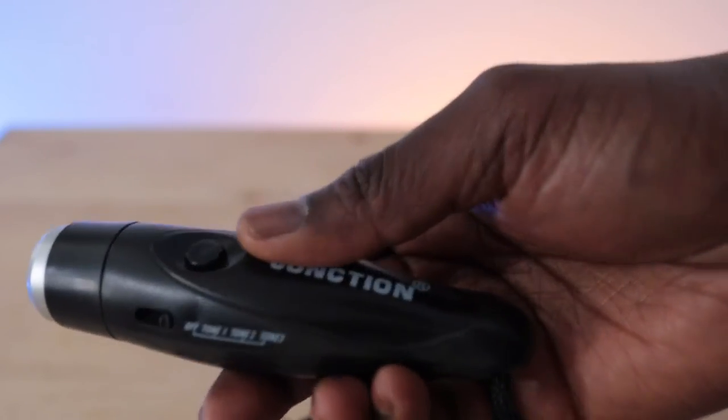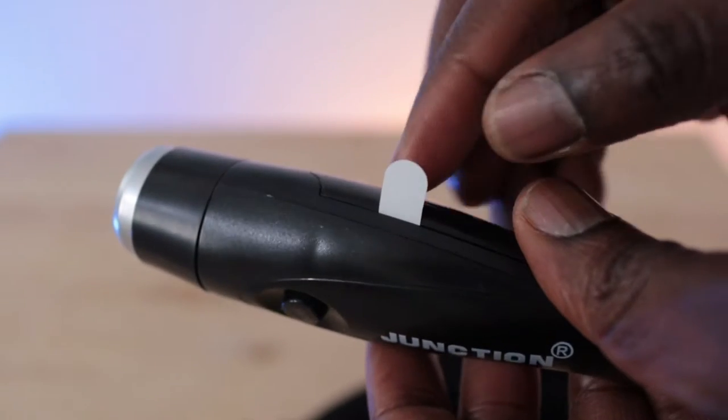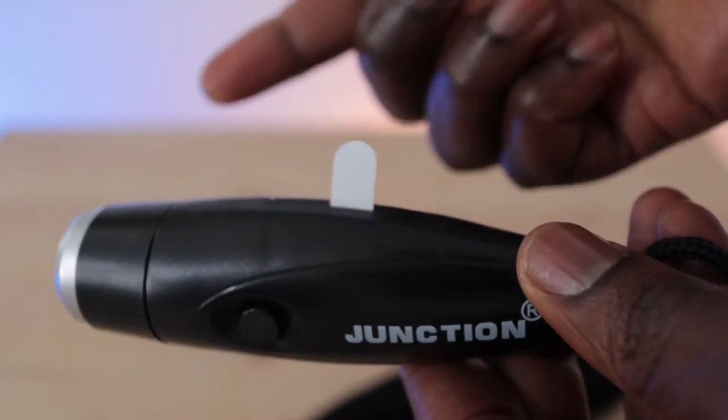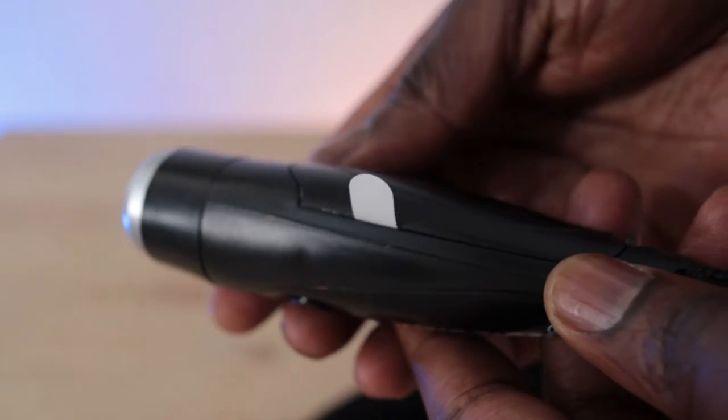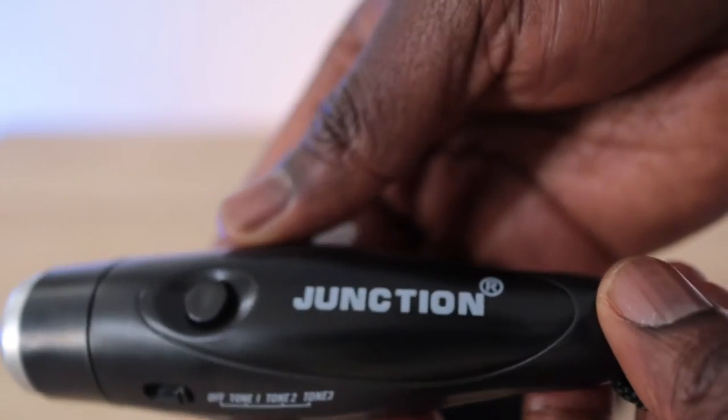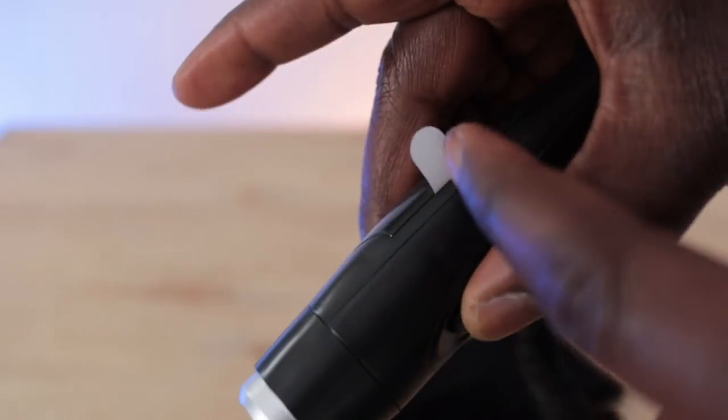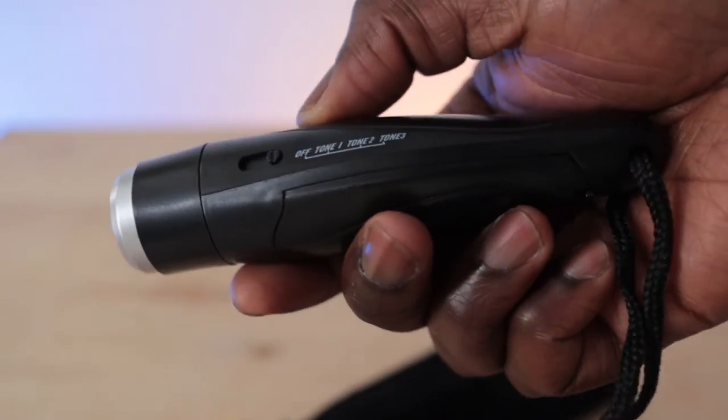It comes with battery installed. As you can see, it's got this tab here that stops the battery from functioning until you use it for the first time, which you have to remove to use. It's got the operation button here. It doesn't work because the battery is being disconnected by this tab at the moment.